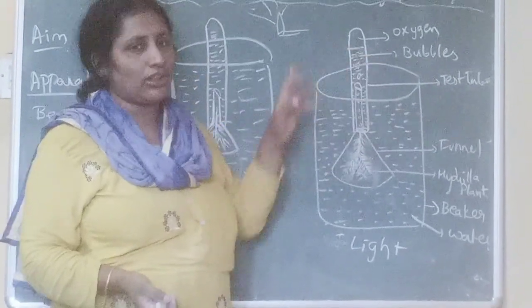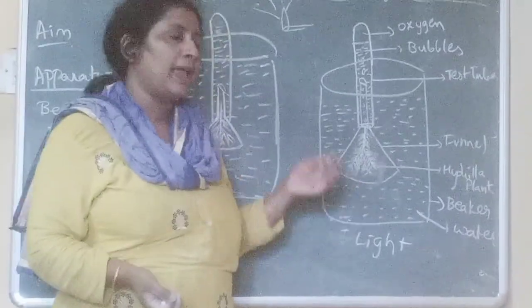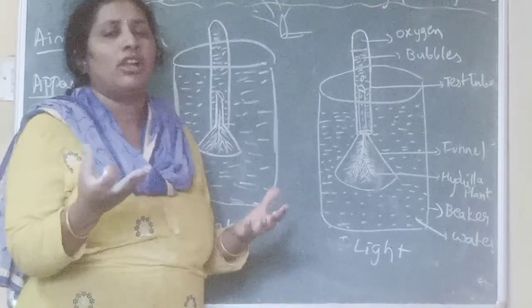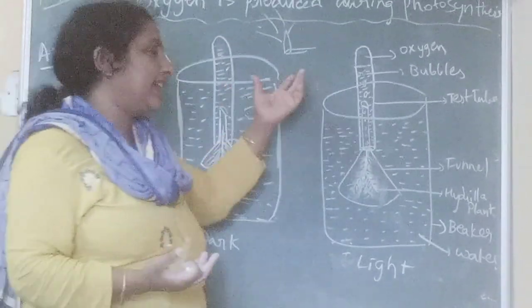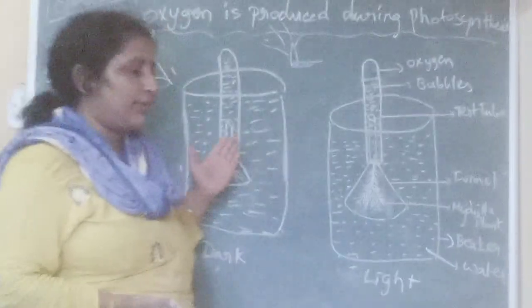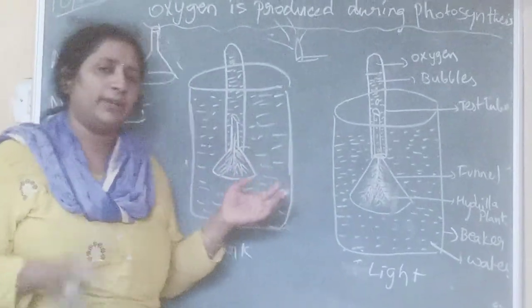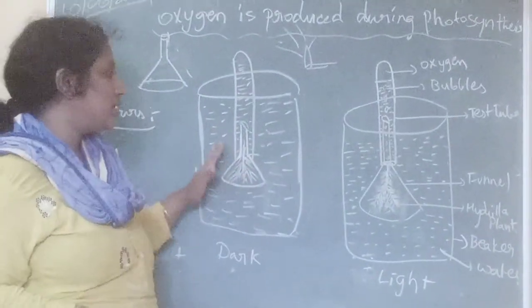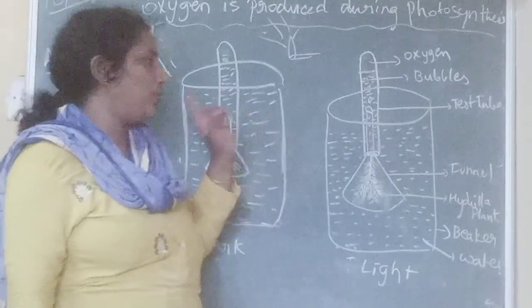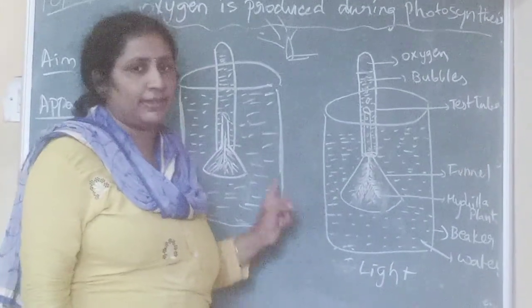The bubbles are nothing but oxygen. To test that this gas is oxygen, burn a matchstick — if the matchstick is glowing or burning for more time, then the gas produced is oxygen. In the dark setup, as there is no oxygen produced, if you put the matchstick it will immediately go out and not burn. By this experiment, you prove that oxygen is produced during photosynthesis. This experiment is called the hydrilla experiment.